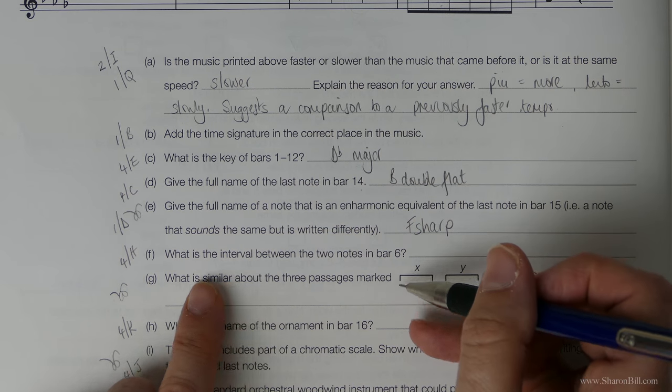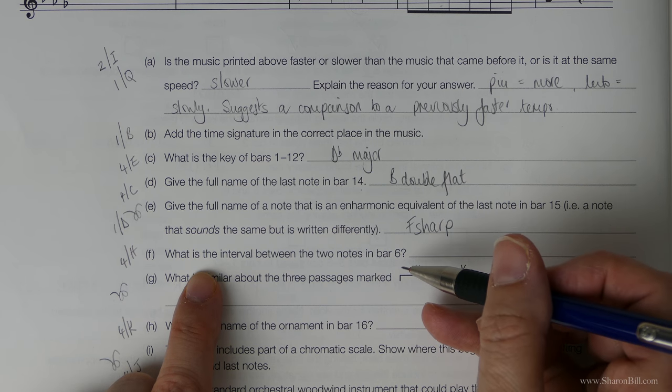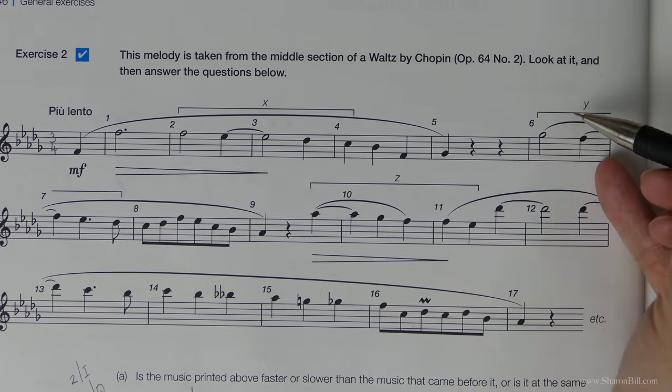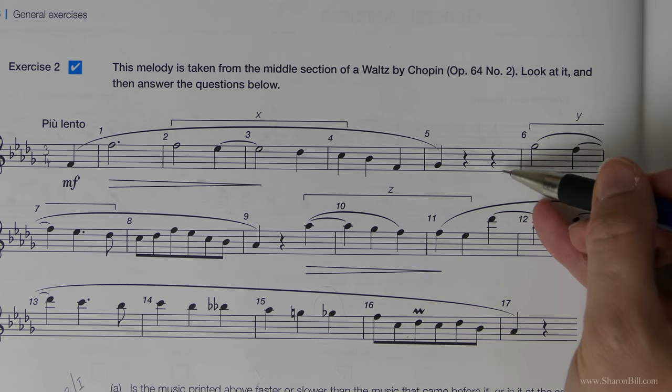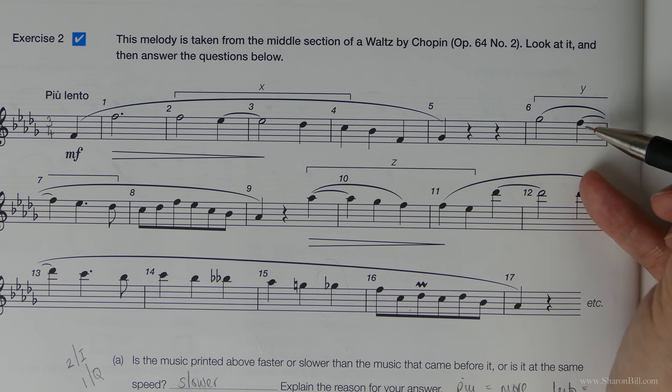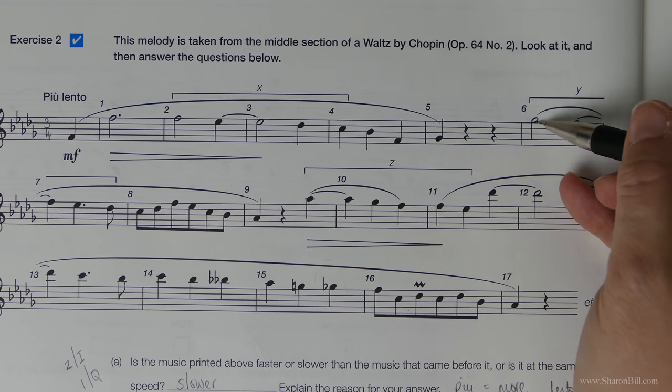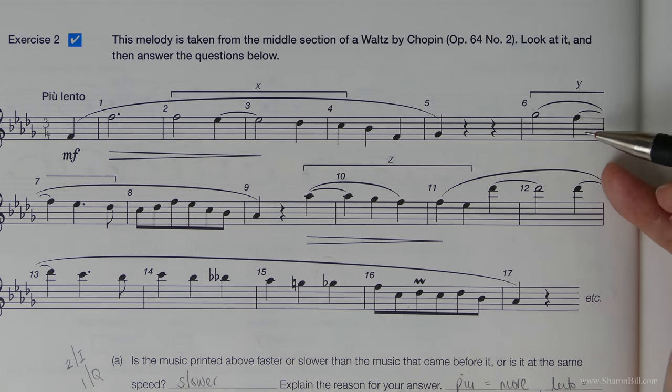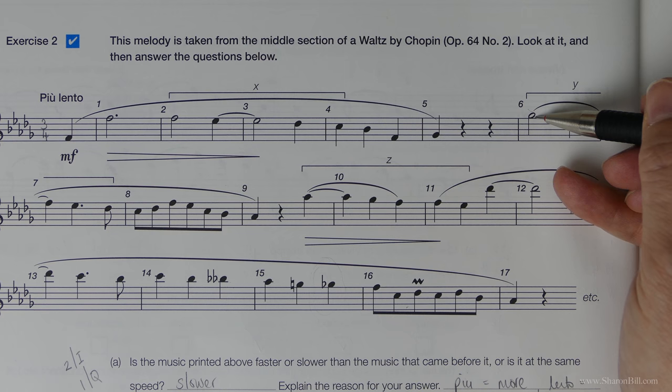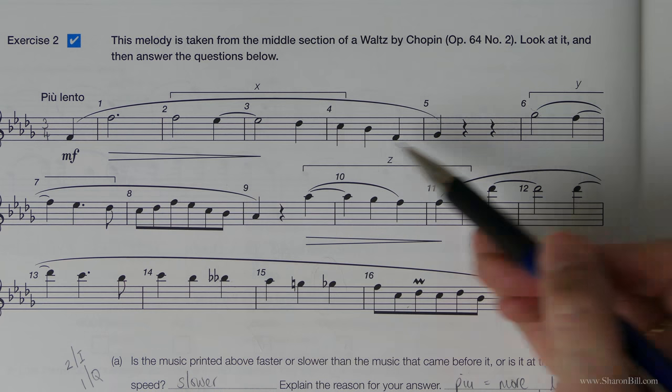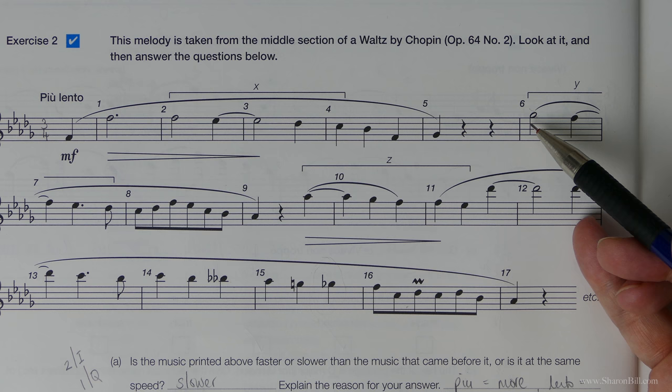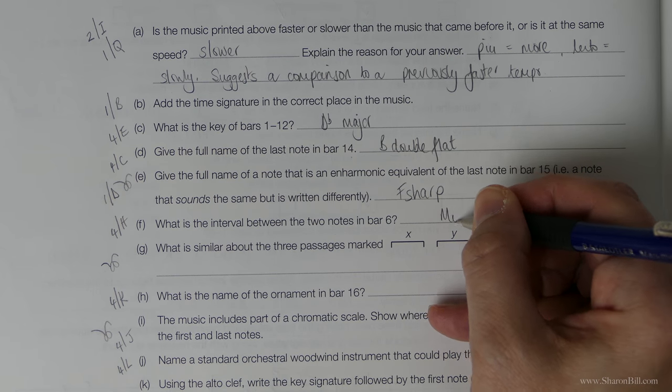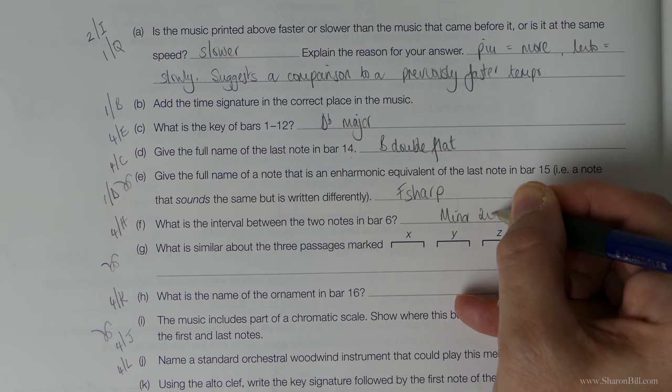Next one. So we're cracking on through. What's the interval between the two notes in bar 6? So here we are. We're looking at these notes here. So we're looking from an F to a G, but don't forget it's a G flat because of your key signature. So F to G natural would be a major second, but F to G flat, with the key signature being active, makes it a minor second. It's a smaller interval. So it's a minor second.